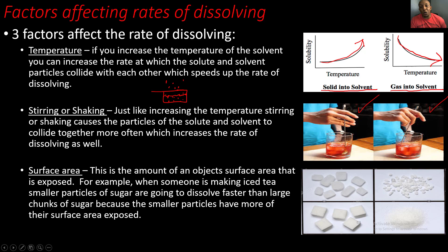Our next factor is stirring or shaking. Just like increasing the temperature, stirring or shaking causes the particles of the solute and solvent to collide together more often, which increases the rate of dissolving. In this picture to the right, a person is stirring the solute and solvent together. The faster they stir, the faster they cause the particles to collide, which causes the solute to dissolve faster.